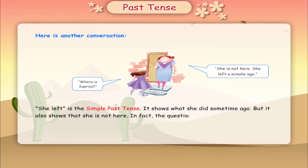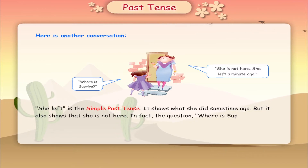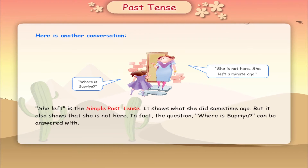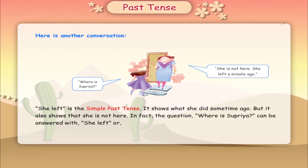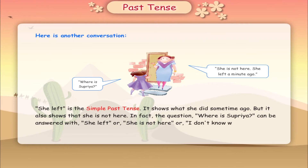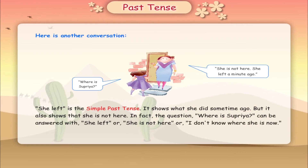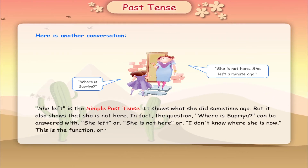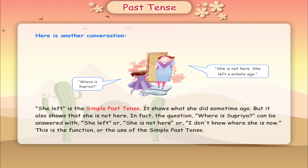In fact, the question 'Where is Supriya?' can be answered with 'She left,' or 'She is not here,' or 'I don't know where she is now.' This is the function, or the use, of the simple past tense.